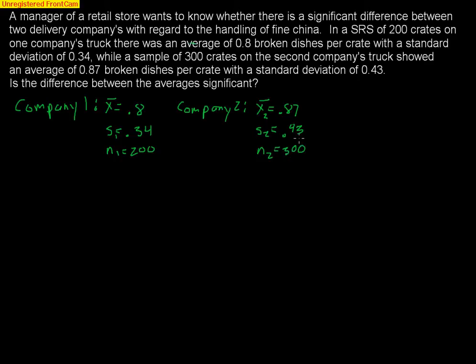We have to make sure that we can use a normal distribution here — we have to assume normality and check our conditions. First, both samples need to be random — the problem states that. Second, both samples have to be less than 10% of the population, and we're assuming there are lots of crates of china out there. Third, the samples have to be big enough — sample sizes of 200 and 300 are definitely large enough to assume normality. Also, the two samples have to be independent of each other, which we assume.